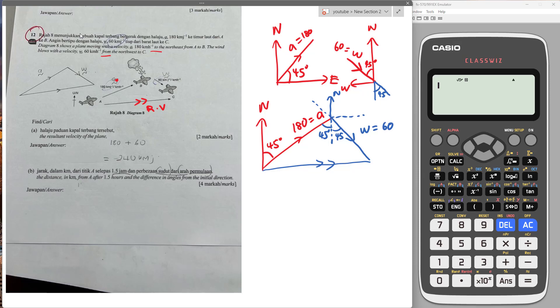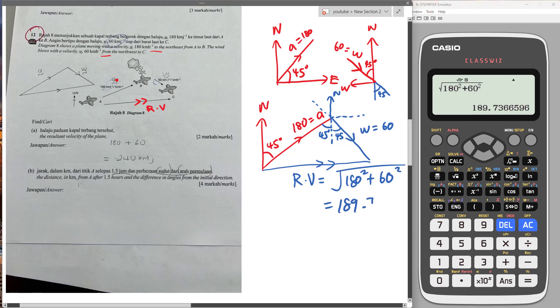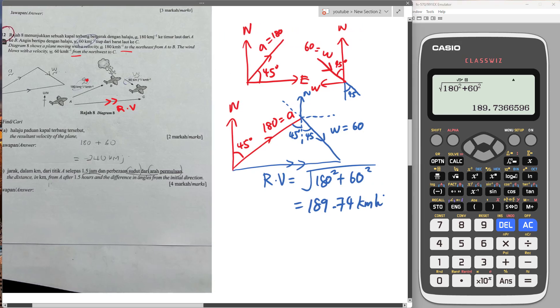If I want to find the resultant velocity of the plane, it's very easy. I can use Pythagoras because this is a right angle triangle. So it will be square root of 180 squared plus 60 squared. I mean, it's not the angle, sorry. 180 kilometers per hour squared plus 60 squared. Using a calculator, it will be 189.74 kilometers per hour. So this is my resultant velocity. Now I'm done with part A.